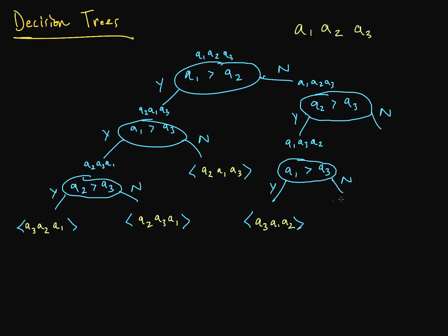And if we go back up a step, and that wasn't the case if a1 was not greater than a3, then we have our other permutation right here. So we have a1, a3, a2.